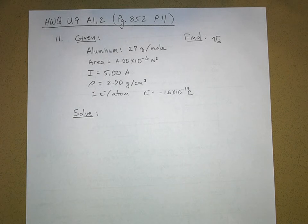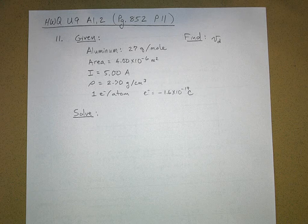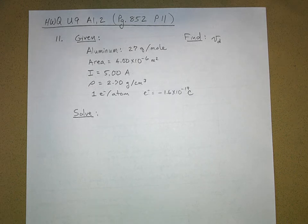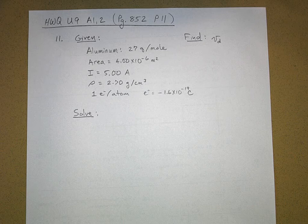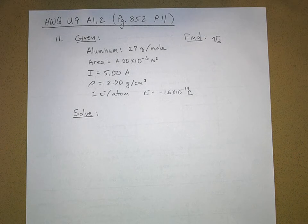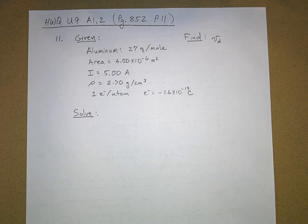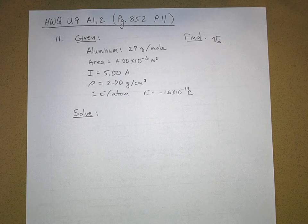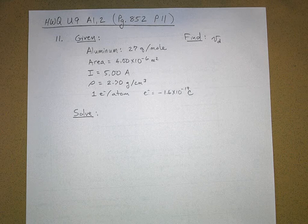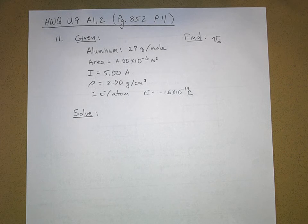Let's do problem number 11 on page 852. I'll read the problem out loud. It says, an aluminum wire having a cross-sectional area of 4 times 10 to the negative 6 meter squared carries a current of 5 amps. Find the drift speed of the electrons in the wire.